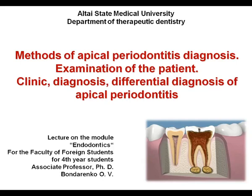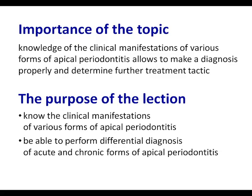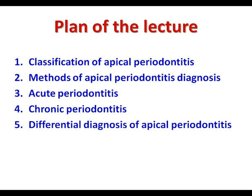The topic of this lecture is methods of apical periodontitis diagnosis, examination of the patient's clinical diagnosis, and differential diagnosis of apical periodontitis. This lecture is very important because knowledge of clinical manifestations of various forms of apical periodontitis allows us to make a diagnosis properly and determine future treatment tactics. The purpose of the lecture is to know the clinical manifestations of various forms and to perform differential diagnosis of acute and chronic forms of apical periodontitis.